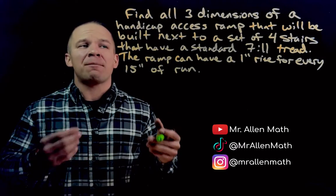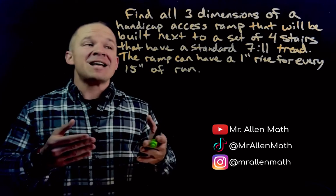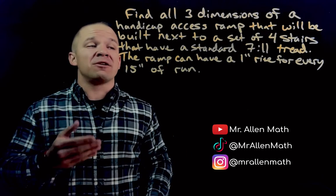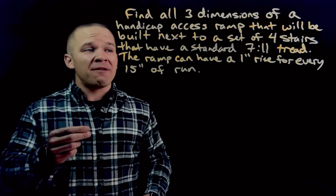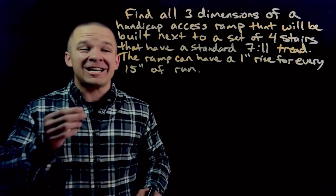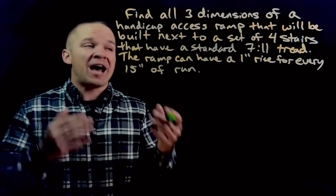We've got to find all three dimensions of a handicap access ramp that will be built next to a set of four stairs that have a standard 7-11 tread. Now the ramp can have a 1 inch rise for every 15 inches of run, meaning it cannot be steeper than that.